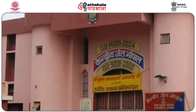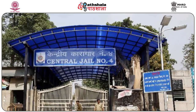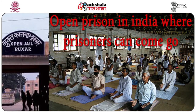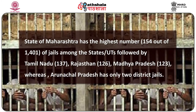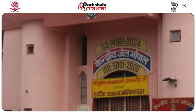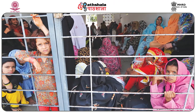The most common and standard jail institutions in existence are the central prisons, the district prisons, and the sub jails. There are other establishments like women jails, Borstal schools, open jails, and special jails. Maharashtra has the highest number of prisons in the country — 154 — followed by Tamil Nadu with 137 and Rajasthan with 126, whereas Arunachal Pradesh has only two district prisons. Prison statistics of 2015 tell us there are 1,401 prisons of different types with an authorized capacity of 3 lakh 66,000.